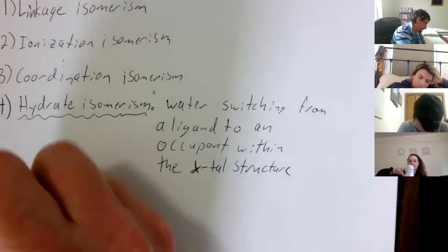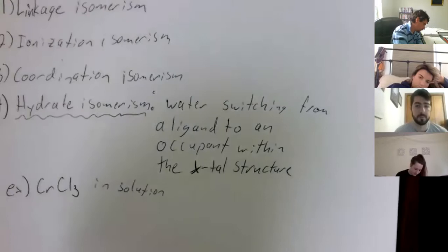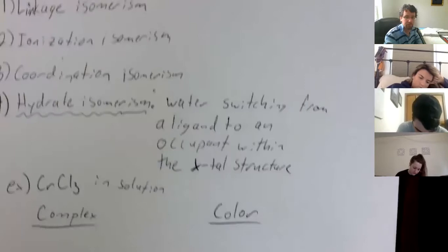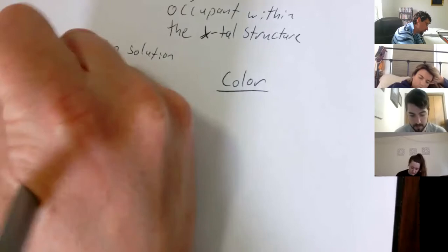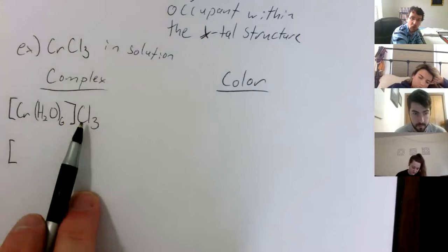An example of this: if you look at CrCl₃ in solution, we're going to keep track of the complex and its color. We start with [Cr(H₂O)₆]Cl₃, then the water is going to exchange with chlorine ligands, giving us [Cr(H₂O)₅Cl]Cl₂, and continuing to [Cr(H₂O)₄Cl₂]Cl.